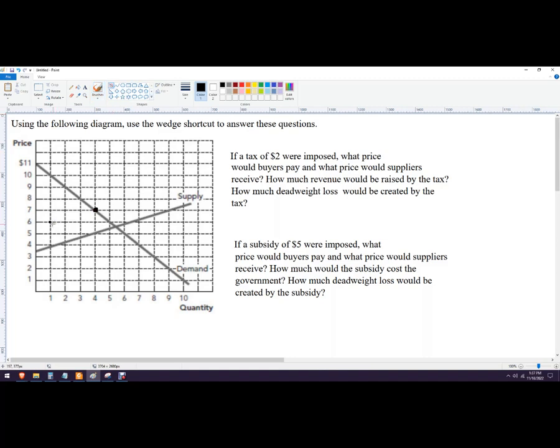That becomes S plus tax, okay, right there. Either way you get the same result, so it doesn't matter. All right, subsidy: $5 subsidy were imposed, okay, so what price would the buyers pay?